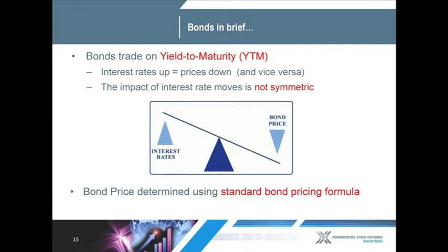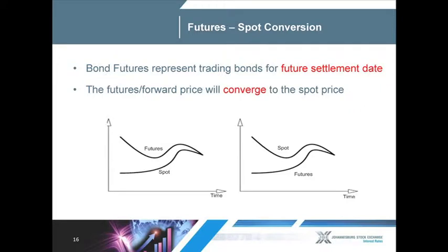The bond has a price determined by a standard bond pricing formula as determined by the Johannesburg Stock Exchange. The bond future itself is merely the value of the bond for a future settlement date. The futures price will trade at a different level to the spot price or the underlying value of the bond, but over time those two prices will converge, and at expiry they will be exactly the same. This allows market participants to hedge their exposure in bonds by merely trading the future over time.